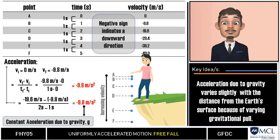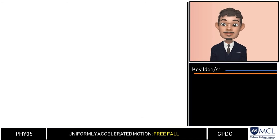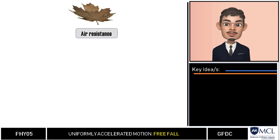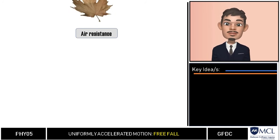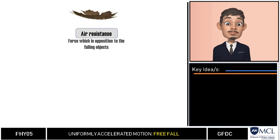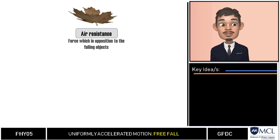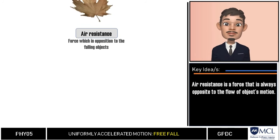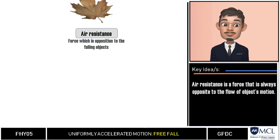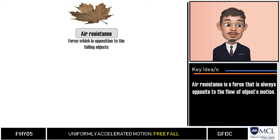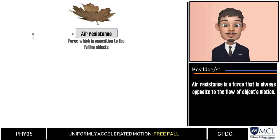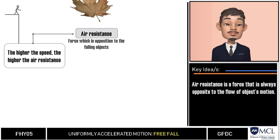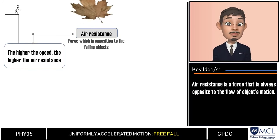We mentioned earlier that free fall is not observed on earth because of air resistance. This air resistance or air friction is a force which opposes the motion of a falling object. Thus we can say that its direction is always opposite to the direction of the object's motion. We can see also that it increases with the speed of the object. The faster the object is falling, the higher the air resistance.